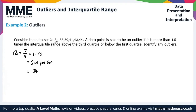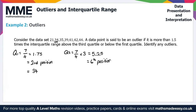For Q3, we do the same but multiply by 3: 7 over 4 times 3 gives us 5.25. We always round up, so that's the 6th position. Counting across to the sixth position — second, third, fourth, fifth, sixth — we get Q3 = 42.